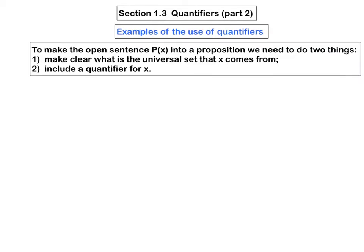Suppose we have an open sentence P(x) which we want to make into a proposition. In order to do that, we have to do two things. First of all, we have to make it clear what is the universal set that the variable x comes from. And secondly, we need to include a quantifier for x.